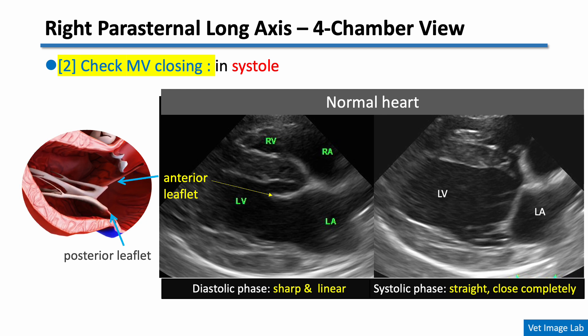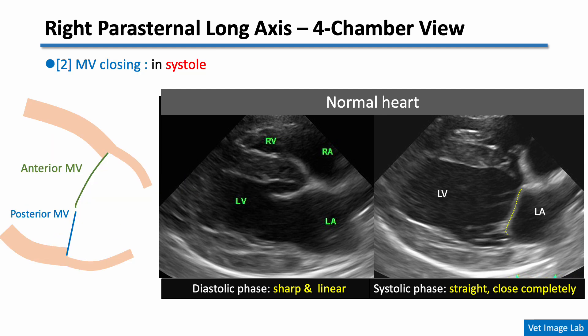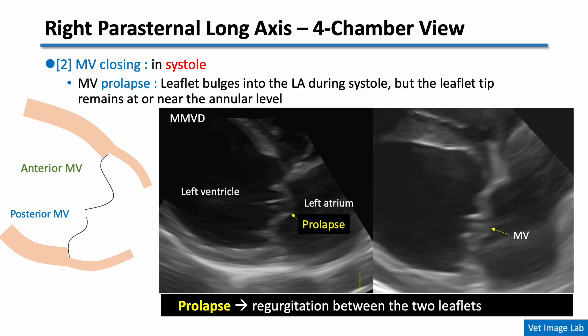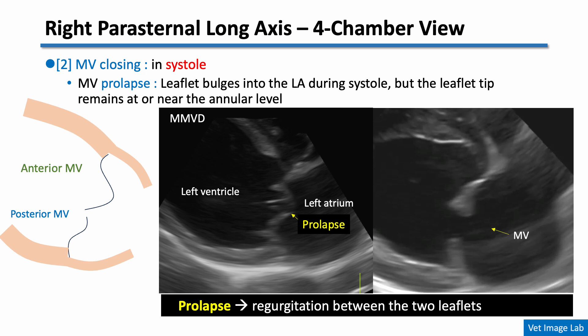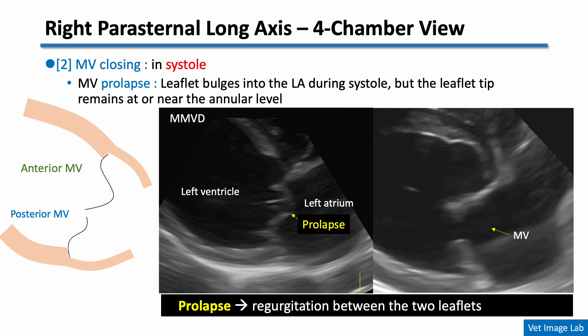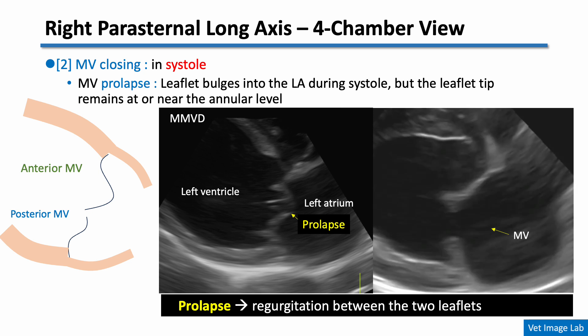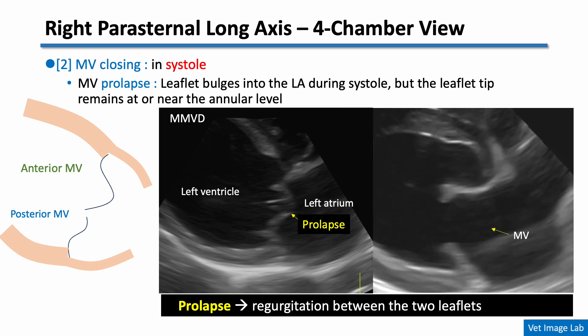Next, in the systolic phase, we evaluate whether the mitral valve closes properly. In a normal heart, the valve leaflets form a straight, continuous closure line, with no gap and no bulging into the left atrium. The anterior and posterior mitral valve leaflets co-apt tightly during systole, and the leaflet tips should meet at the annular plane without protruding into the left atrium. But in cases of MMVD, the mitral leaflet bows or billows into the left atrium during systole, while the tip still remains at or very near the annular plane. This finding is called mitral valve prolapse, and such incomplete coaptation creates a central gap, resulting in mitral regurgitation.